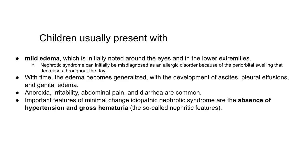Children with nephrotic syndrome usually present with mild edema, initially noted around the eyes and in the lower extremities. It can be misdiagnosed as an allergic disorder because of periorbital swelling that decreases throughout the day. With time, edema becomes generalized with the development of ascites, pleural effusion, and genital edema. Anorexia, irritability, abdominal pain, and diarrhea are common. Important features of minimal change nephrotic syndrome are the absence of hypertension and gross hematuria.